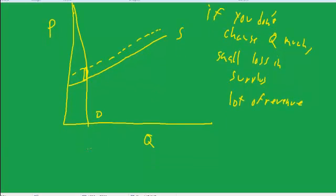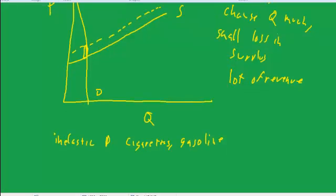So examples of things with inelastic demand would be things like cigarettes, gasoline, things like that. Unfortunately, those are things that are often purchased a lot by poor people, and so if the government just merely tried to tax those things, it would not be a very progressive tax policy.